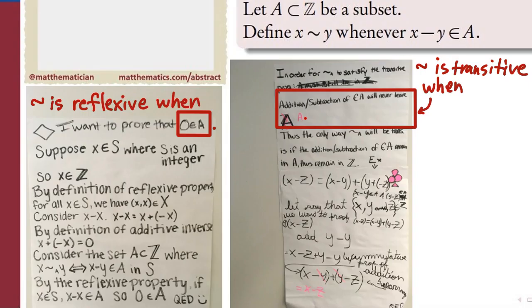Here, your groups correctly deduced that this relation will be transitive exactly when addition of elements of A will always remain within A. In other words, if you give me two elements of A and I add them together, that their sum needs to also be an element of A. Why is that the case?